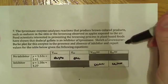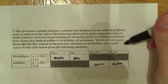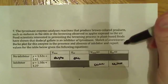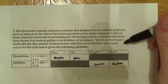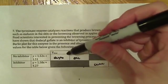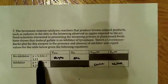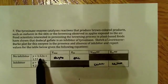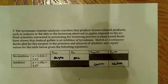Sketch the Lineweaver-Burk plot for the enzyme in the presence and absence of inhibitor and report the values for the table below. The first thing they want us to do is calculate the Vmax for no inhibitor. And we have this equation here, y equals 1.52x plus 1.51.